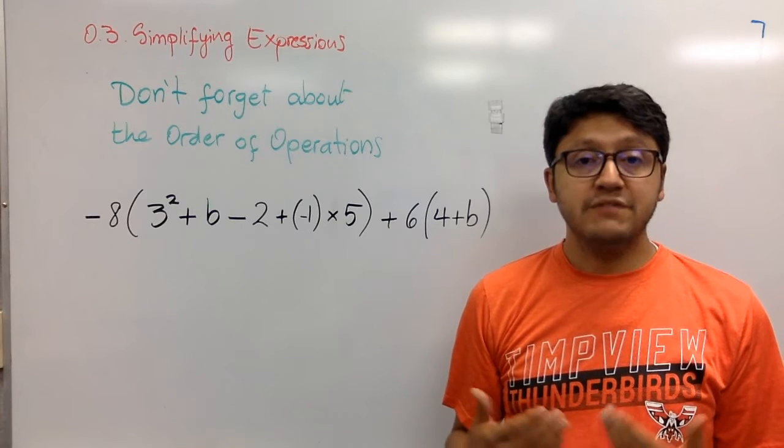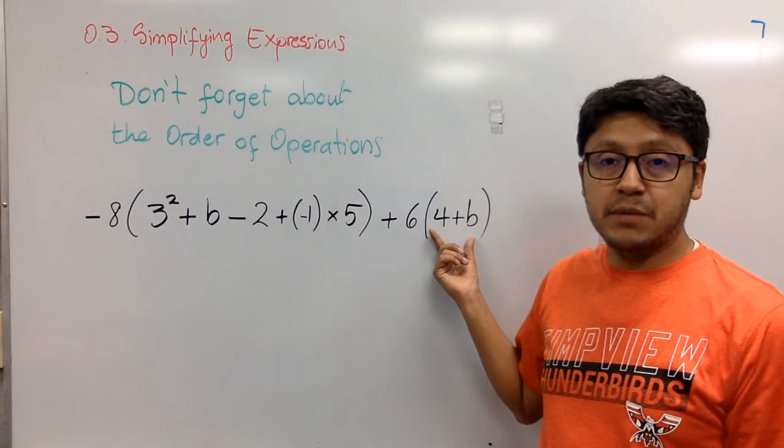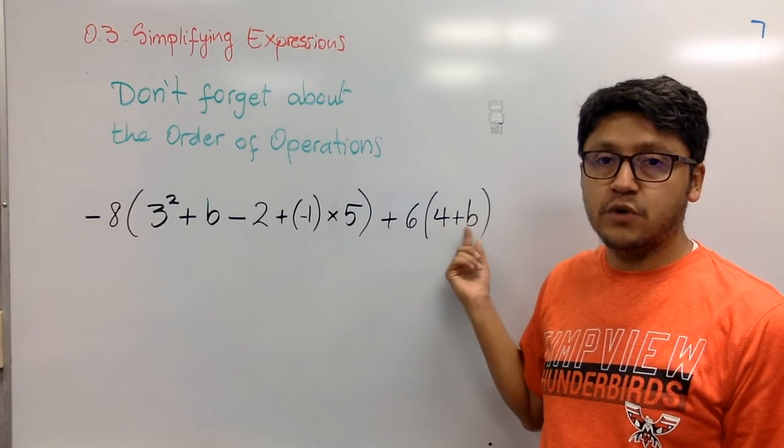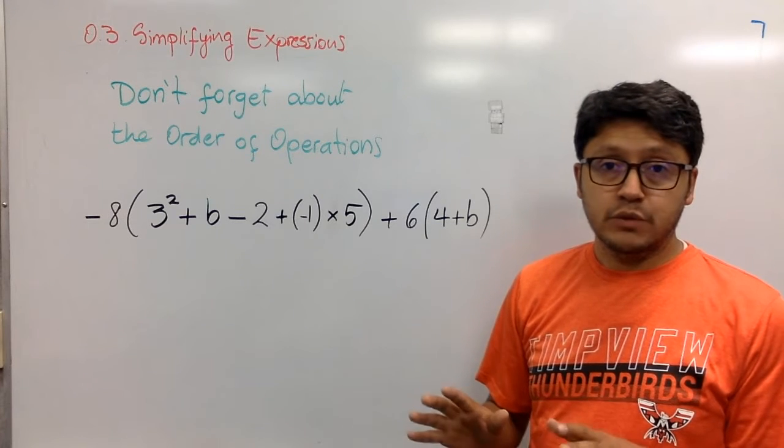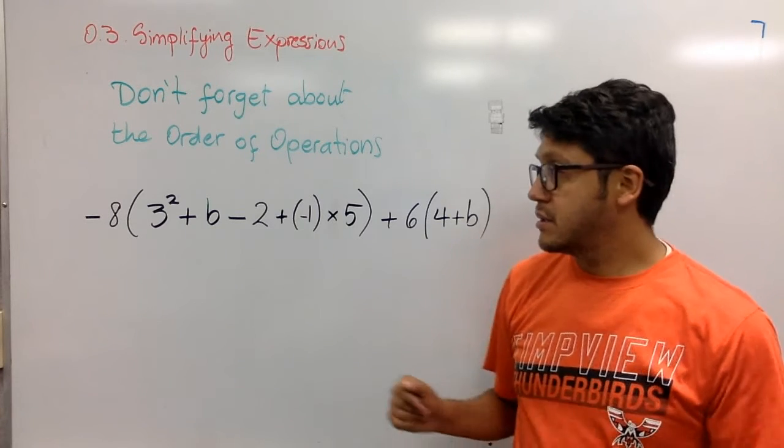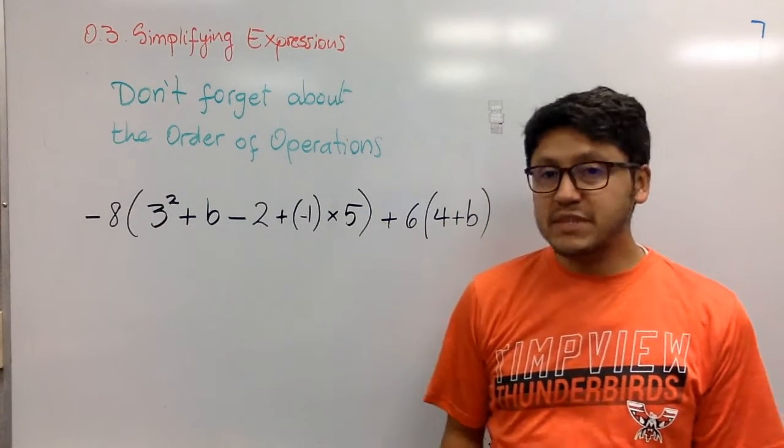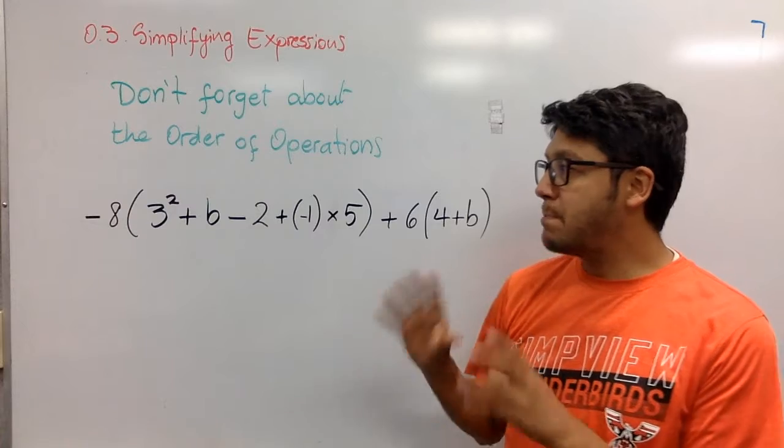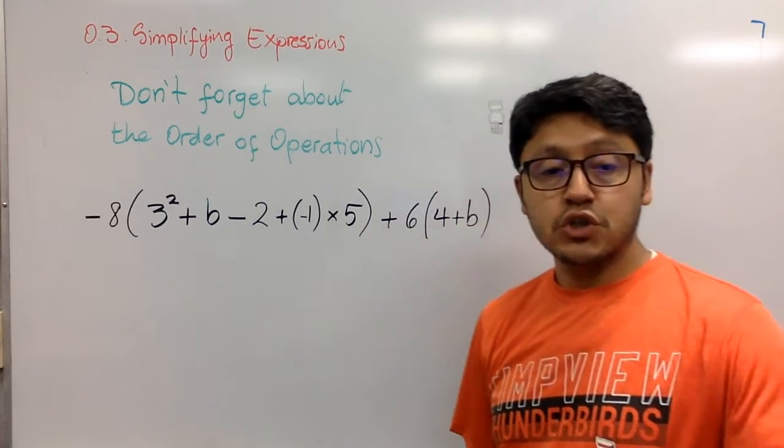Now, we have some parenthesis here. Do we, or can we do something about this one? No, because 4 and b are not like terms. So we just have to keep it like that. But whatever we have in this case, it can be solved. It can be simplified somehow before we proceed to do the distributive property.